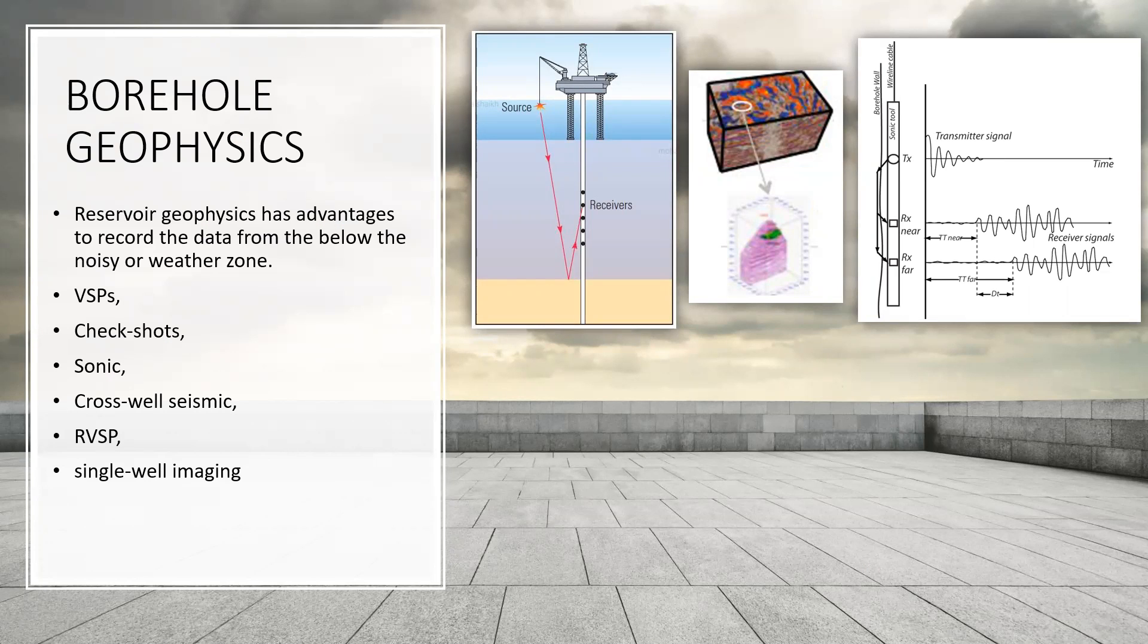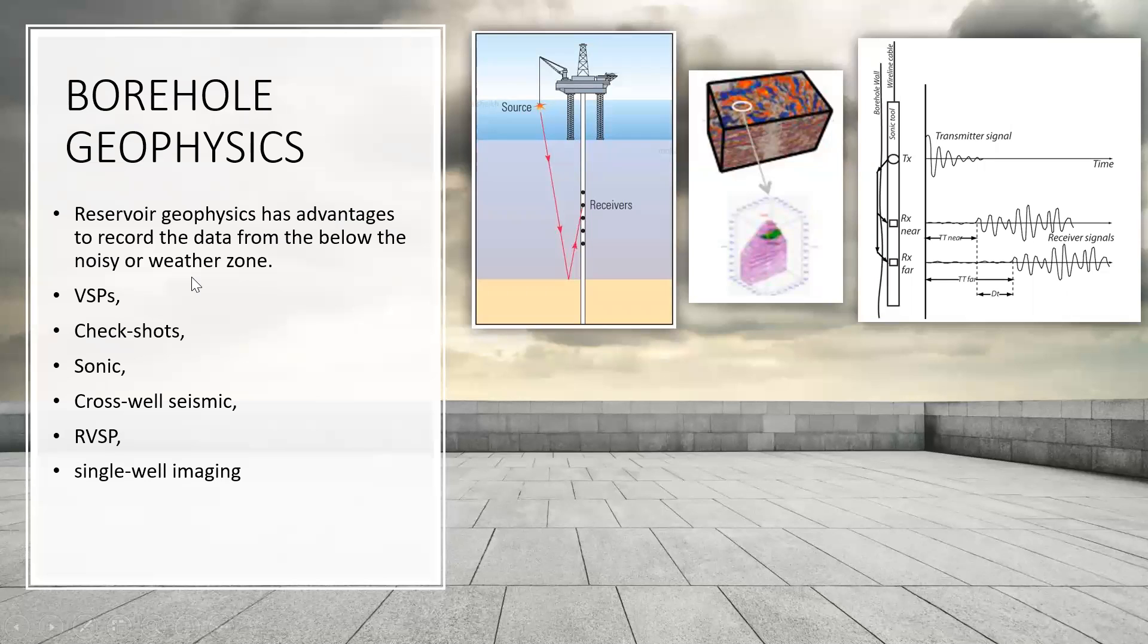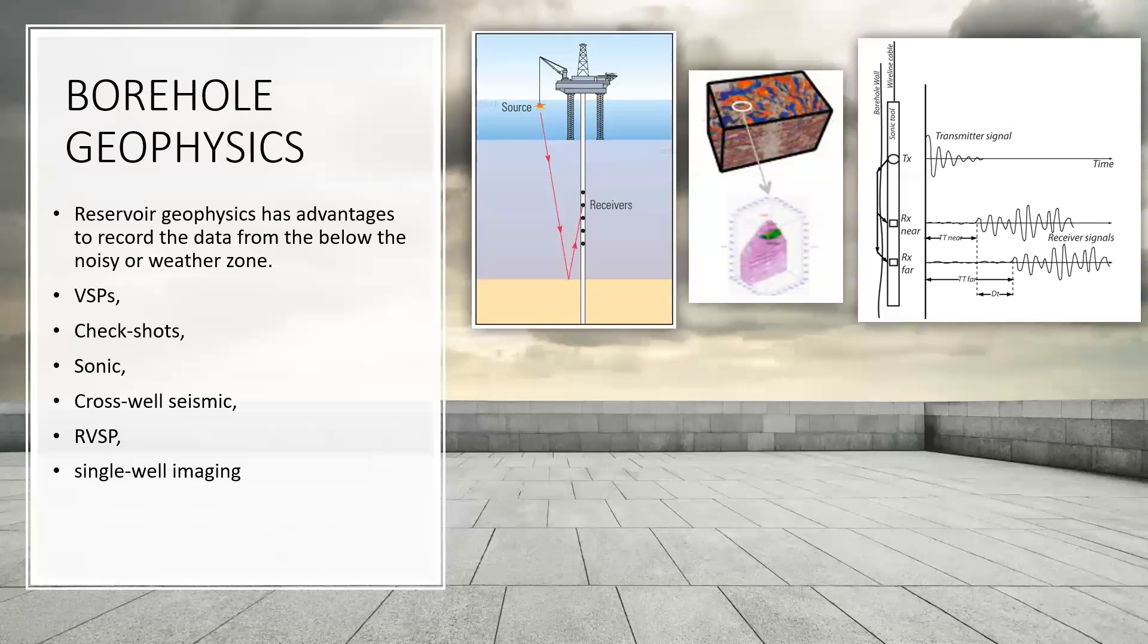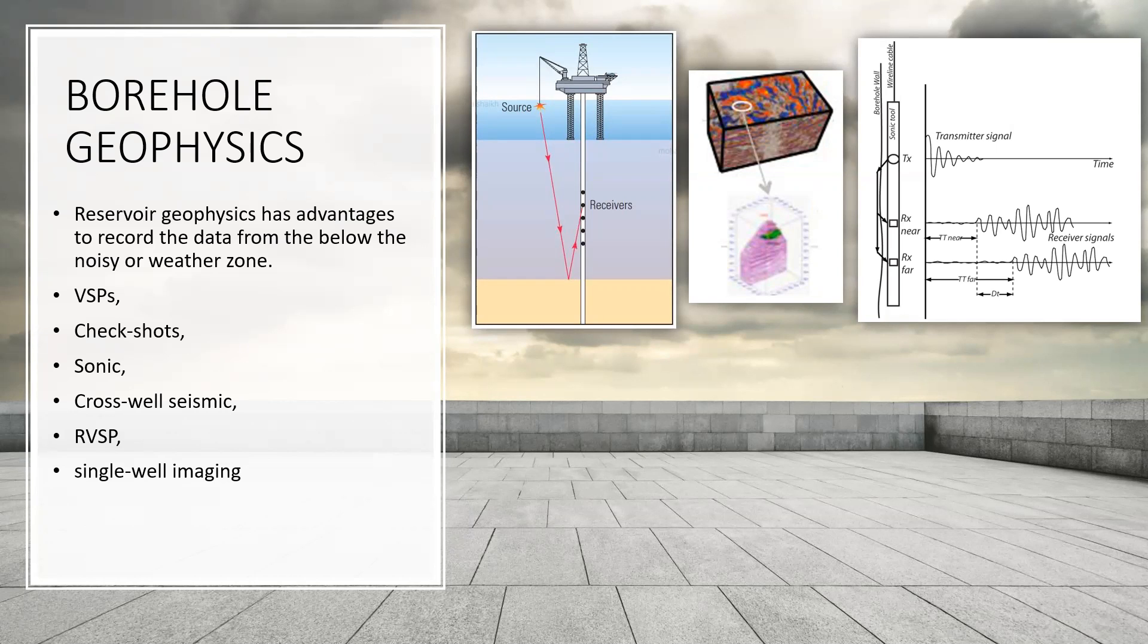When it comes to reservoir geophysics, all these tools that are listed here provide extra and more detailed information about reservoir. That's why we can say reservoir geophysics has advantage to record the data from below the noisy or weathered zone. Initially, the objective of all these tools was to tie between surface seismic data and well observations, but they have been extended beyond that in many cases. For example, if I give an example of VSP method, it provides a lot of additional information like better vertical and spatial resolution, provides to estimate quality factors, look at the small faults and thin layers around the wellbore, improve processing for surface seismic, or it can be used to identify the overpressure zones.